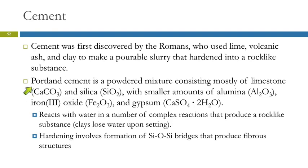The most common cement is Portland cement — and that has nothing to do with Portland, Oregon. Portland cement is a powdered mixture of mostly limestone (calcium carbonate), silica (SiO₂), and smaller amounts of aluminum, iron oxide, and gypsum. It reacts with water through a series of complex reactions that produce a rock-like substance.